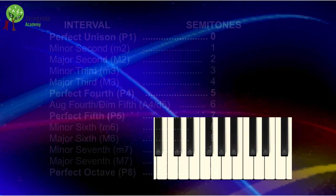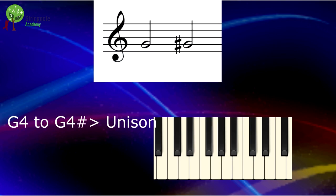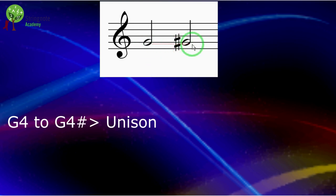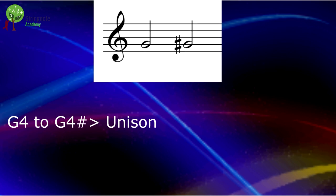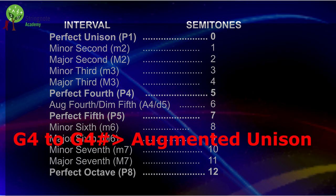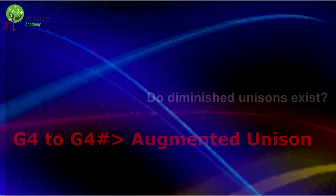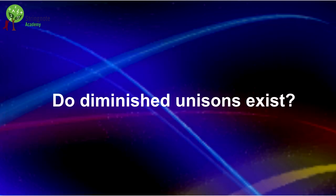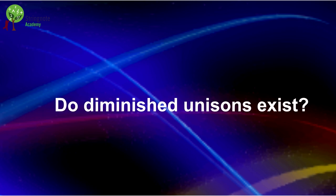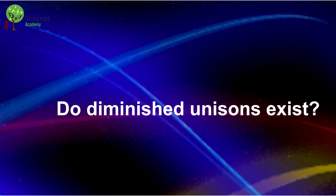Here I have a G and a G sharp. It is a unison. But if I count the semitones, these two notes are a semitone apart, and two notes in a unison should have no semitones in between, according to our table. Then this is an augmented unison. Now, do diminished unisons exist? I leave it for you to find out and write your answer in a comment below.